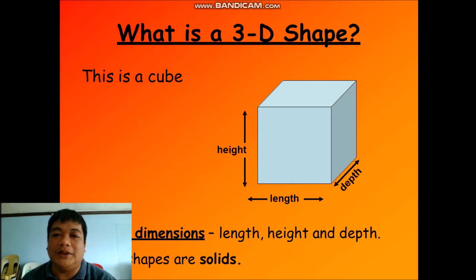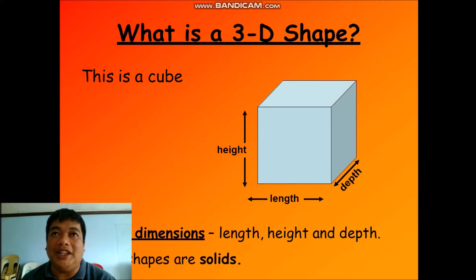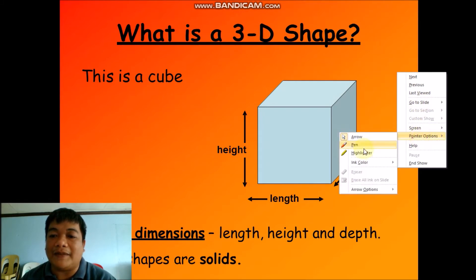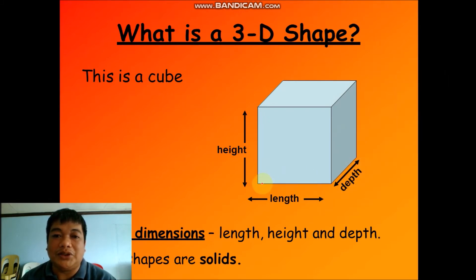During your last lessons we discussed plane figures. Plane figures are a 2D shape, or two-dimensional shape, so it means they have only two dimensions: the length and the width. This time, solid figures have three dimensions — one dimension is added — so in a solid figure we have the length, the width, and the height.